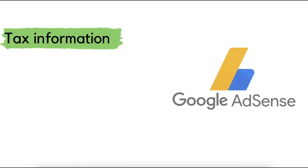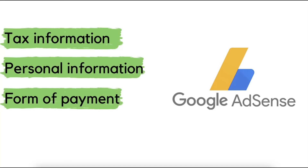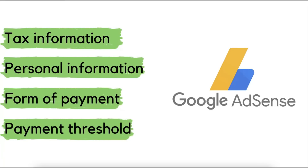In order to make sure that you receive your payment from AdSense with no delay, make sure to comply with the requirements: your tax information, your personal information, your form of payment, and make sure to meet the payment threshold in order for your money to be processed. If you fail to meet the payment threshold, your earnings will roll over to the following month until such time you've hit the payment threshold — and that's when AdSense will start processing your payment.